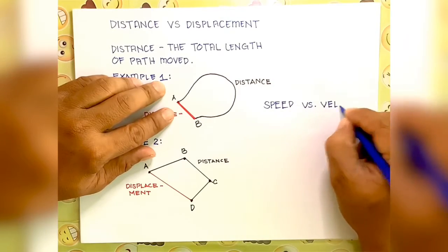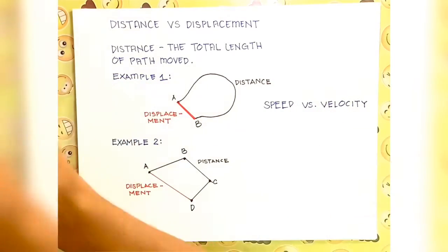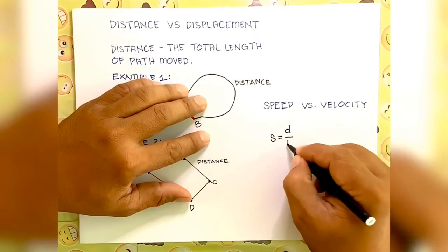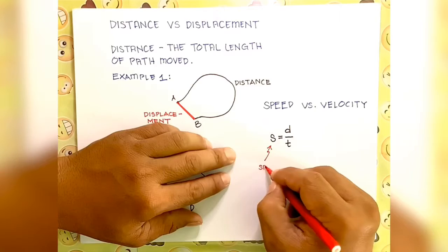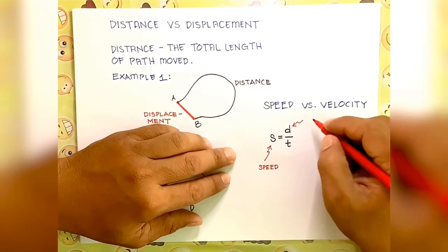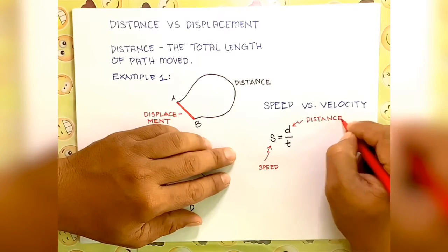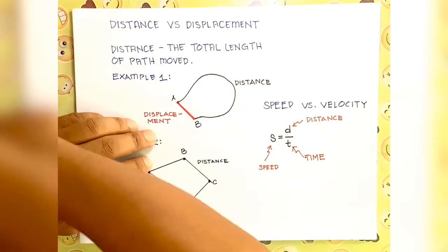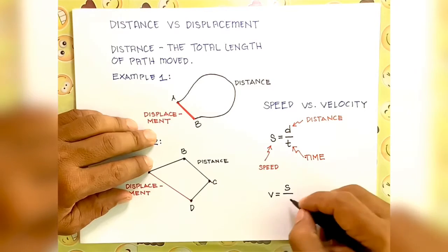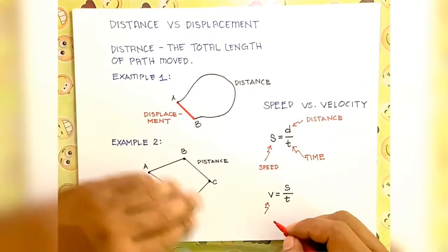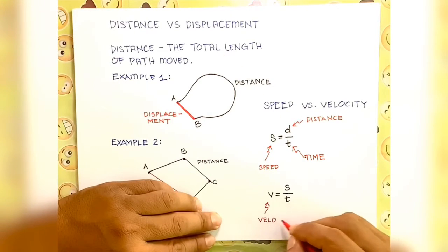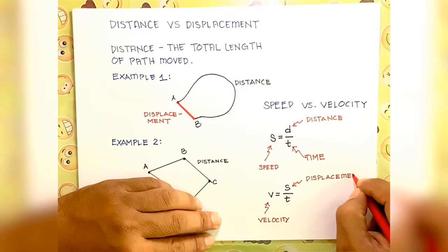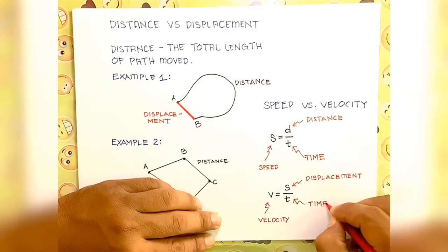So we will relate distance and displacement to speed and velocity. The formula for speed is given by S (speed) equals D (distance) over T (time). While the formula for velocity is given by V (velocity) equals S (displacement) — not distance — over time.